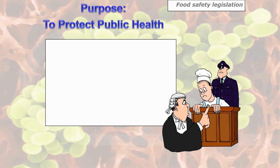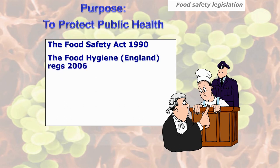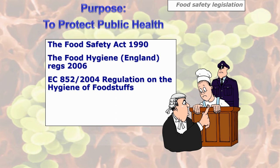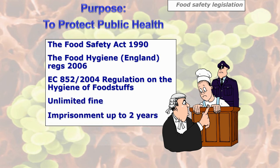The last few slides cover food safety legislation. What is food safety legislation? The purpose is to protect public health — make a note of that as it's a likely question. We have the Food Safety Act, the Food Hygiene (England) Regulations 2006, and the EC 852/2004 Regulation on the hygiene of foodstuffs. Penalties can be anything up to an unlimited fine and imprisonment up to two years. Under the manslaughter act, if found guilty of killing somebody through food poisoning, penalties could be up to seven years.